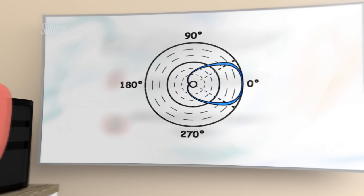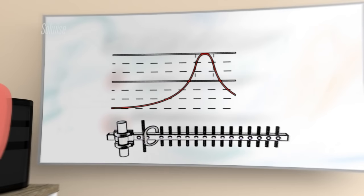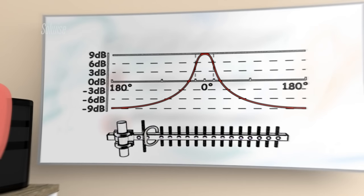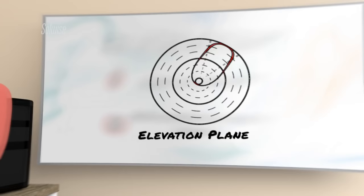The diagram we've drawn here shows the radiation pattern in the horizontal plane. To fully describe the radiation pattern of an antenna, we also need to take the side view, called the elevation plane.